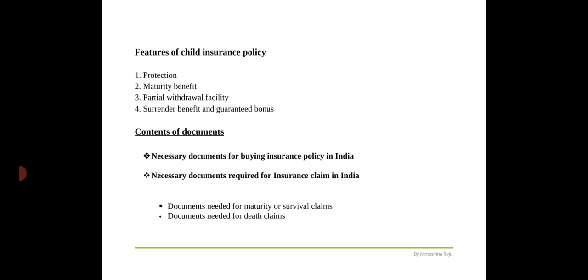For every life insurance policy, the following documents are required to purchase: the life insurance proposal form, duly filled and signed by the proposer or the life insured; photograph of the proposer and the life insured if different from the proposer; age proof of the proposer and the life insured; identity proof of the proposer and the life insured; address proof of the proposer; medical examination reports if required based on age or sum insured; income proof of the proposer if the sum insured or premiums are high; and the PAN card of the proposer.